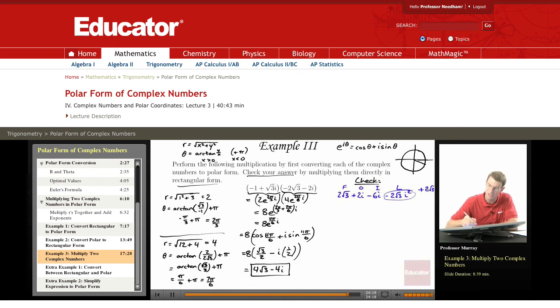And if we simplify that down, we get 2 root 3 plus 2 root 3, 4 root 3, plus 2i minus 6i is minus 4i. And that does indeed check with the answer we got by converting into polar form.